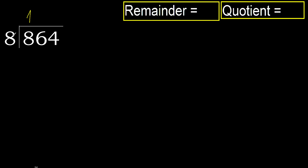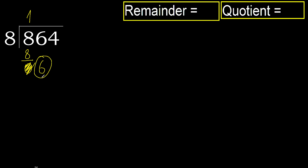Multiply by 1 is 8, which is not greater. 8 minus 8 is 0. Bring down the 0, then bring down 6. 6 is less, therefore next.